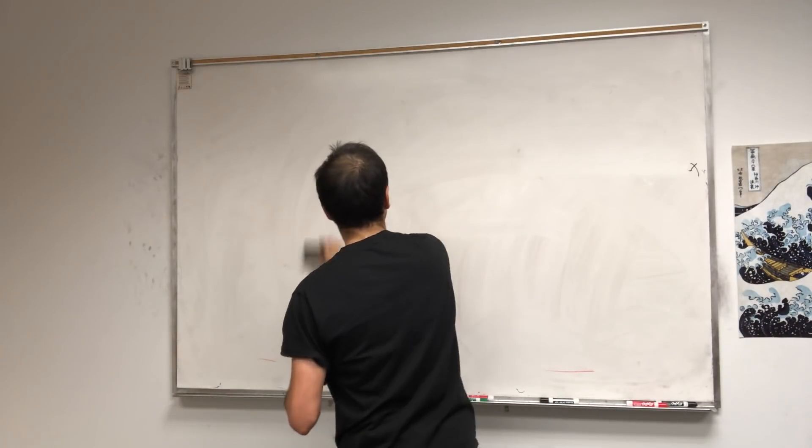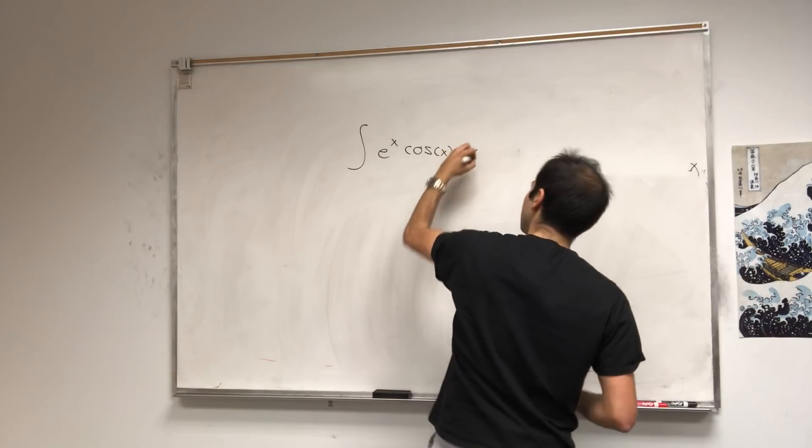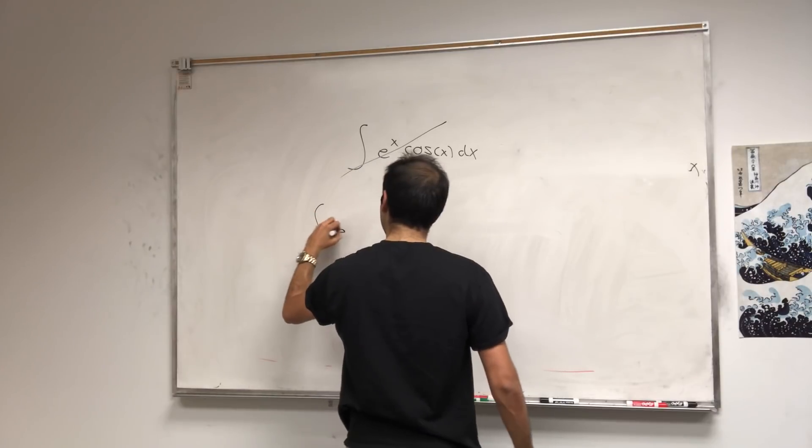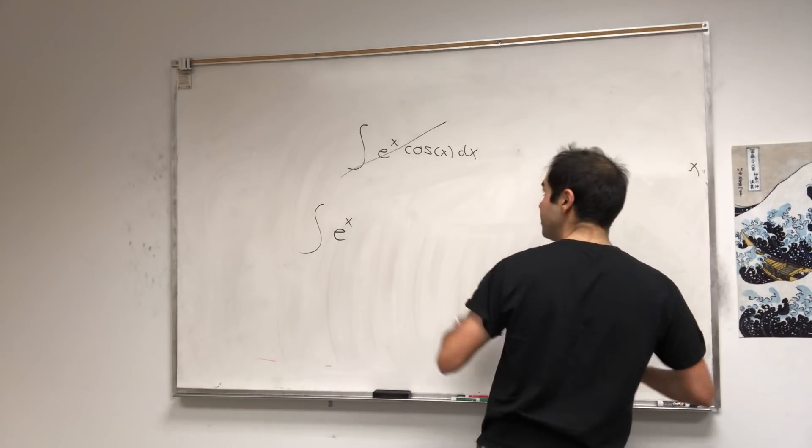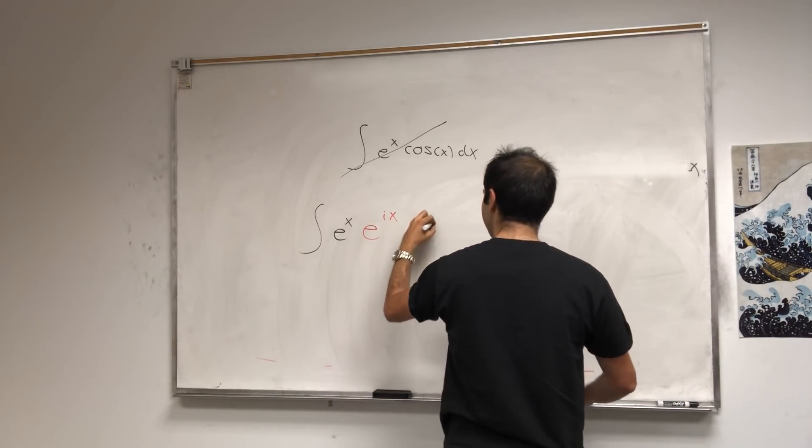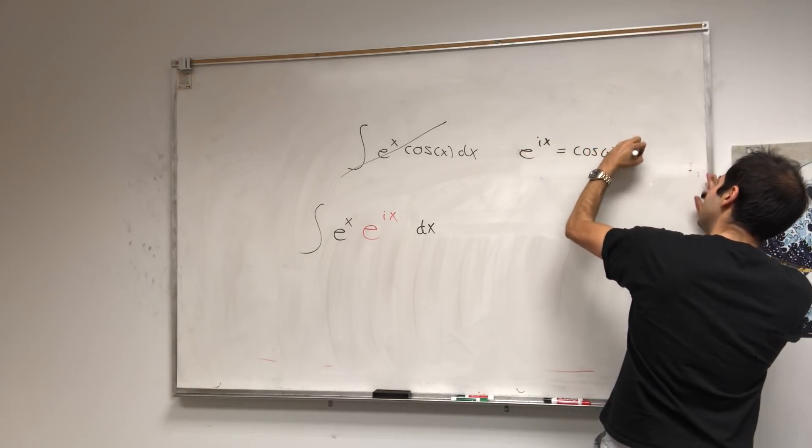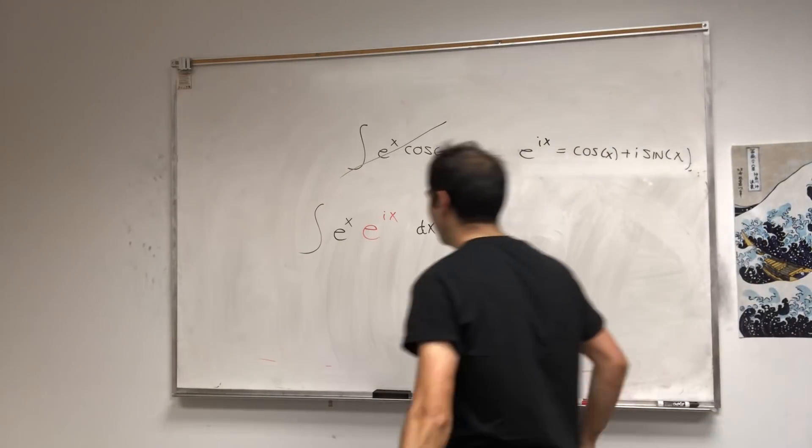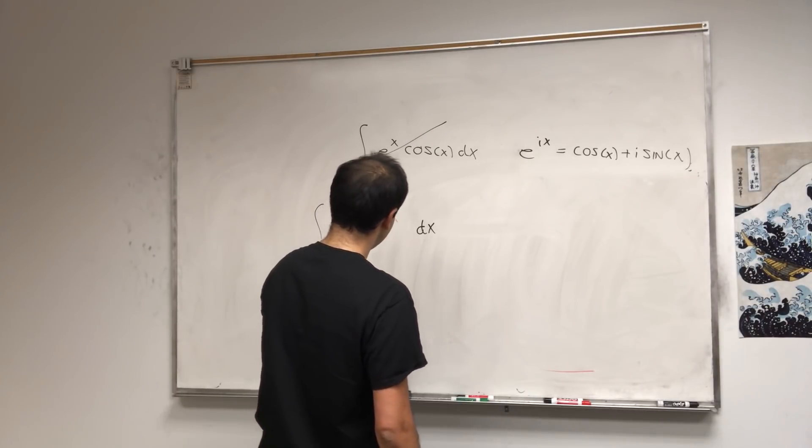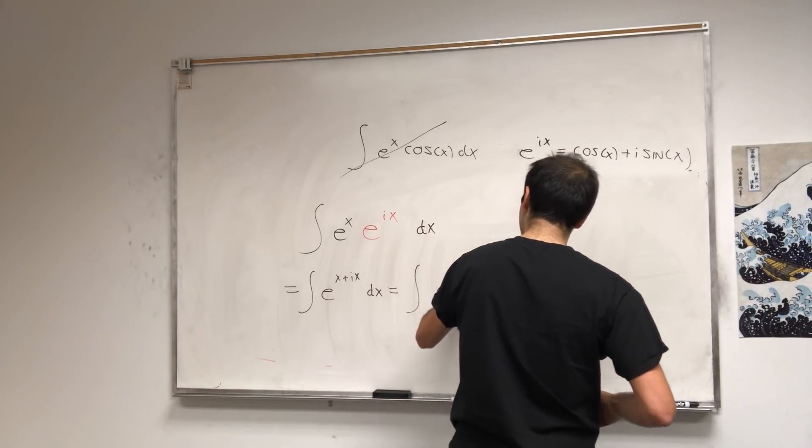Let's start again. We have integral of e^x cos(x). But instead of doing that, we'll solve something harder or easier or harder, depending on how you feel. Instead of doing cos(x), let's do e^(ix). So let's make this complex. I'd like to remind you, e^(ix) becomes cos(x) + i sin(x). Because what's beautiful is, this becomes e^(x + ix) dx, and that's integral of e^((1+i)x) dx.